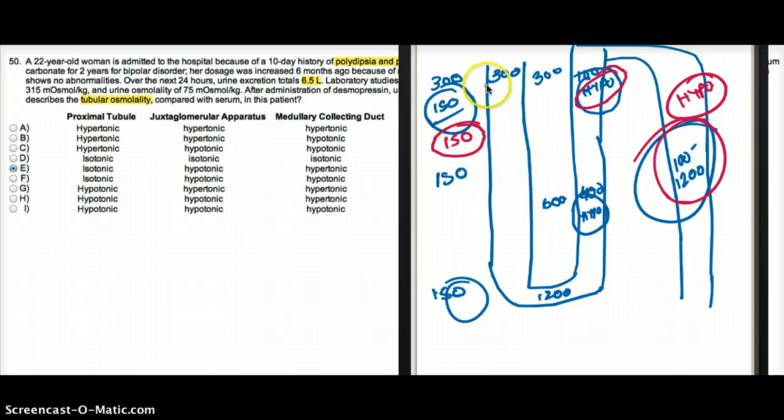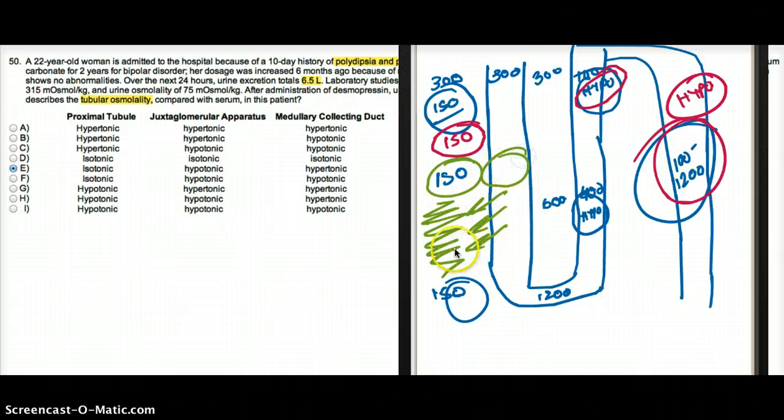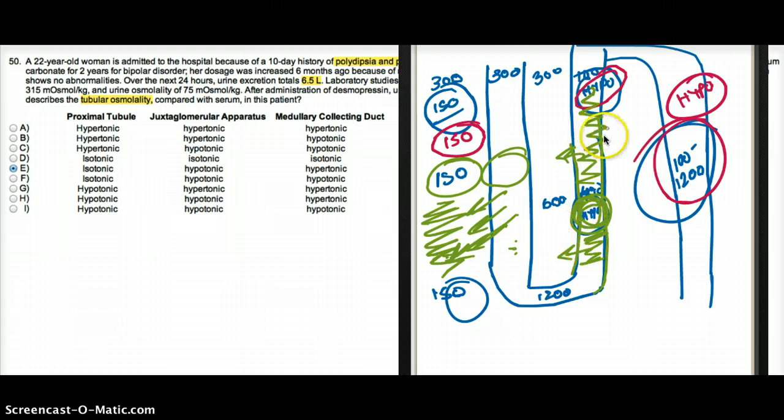So before moving on to the next point, I just want to say that the descending limb is permeable to water. The water can come out and the interstitium is hyperosmolar. As a result, there is isotonic here and here because water is going to come out and it's going to kind of balance the tonicity of interstitium and the tubules. But as the ascending limb is going up, this ascending limb is impermeable to water. So water is kind of trapped inside. As a result, making this segment of the nephron hypotonic because water cannot come out but electrolytes can. Electrolytes can come out but water cannot come out, making this segment hypotonic.